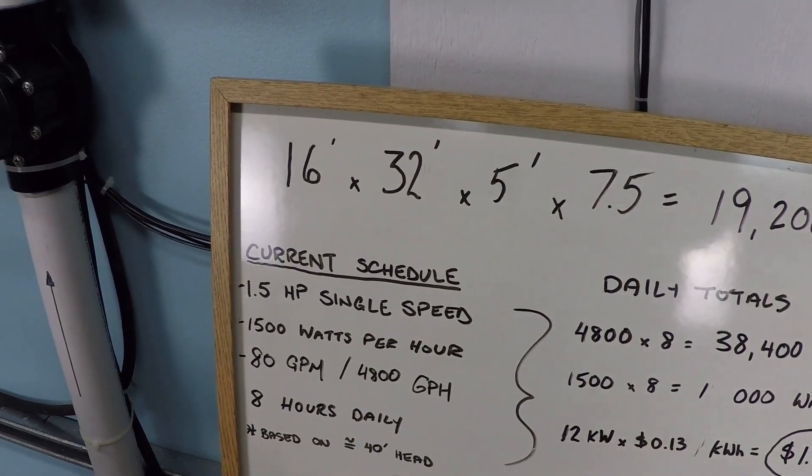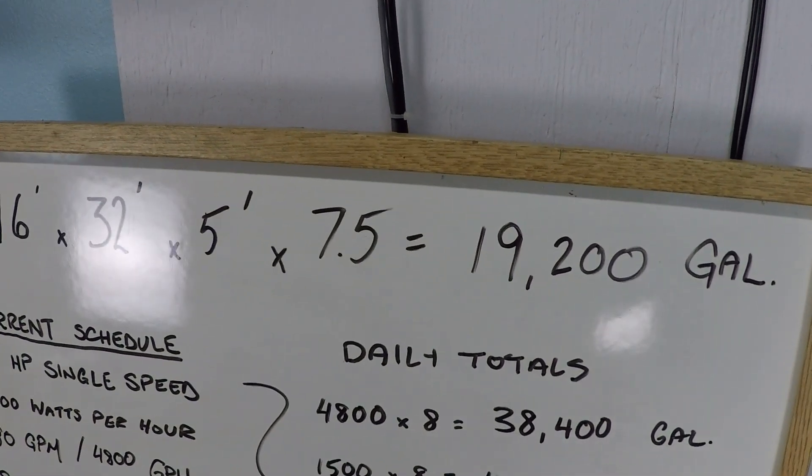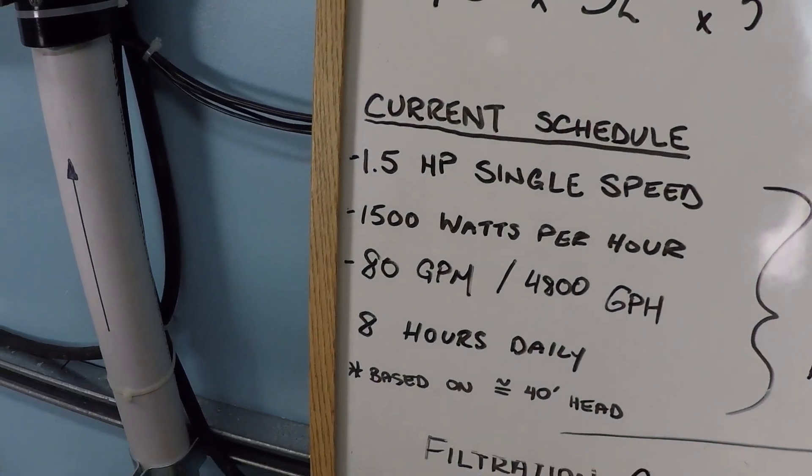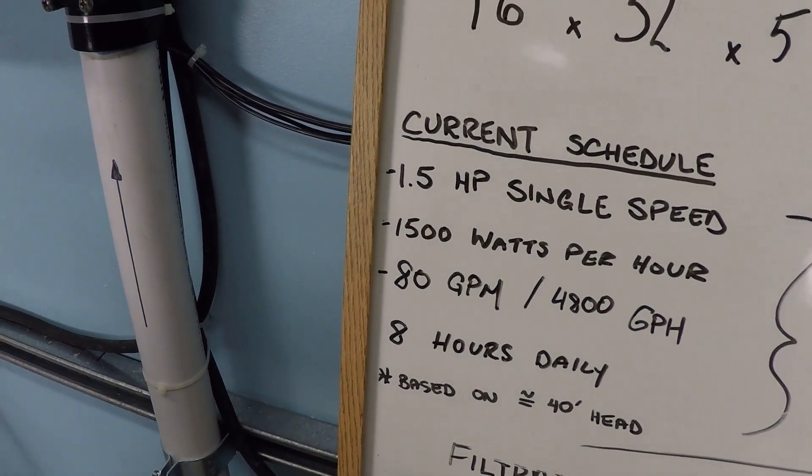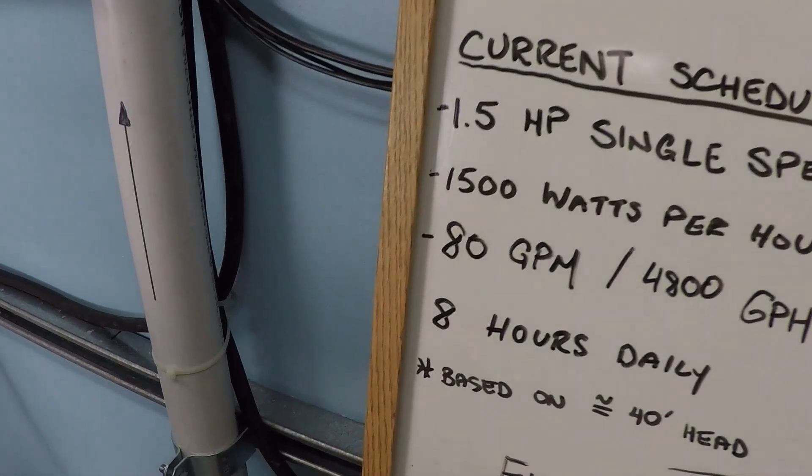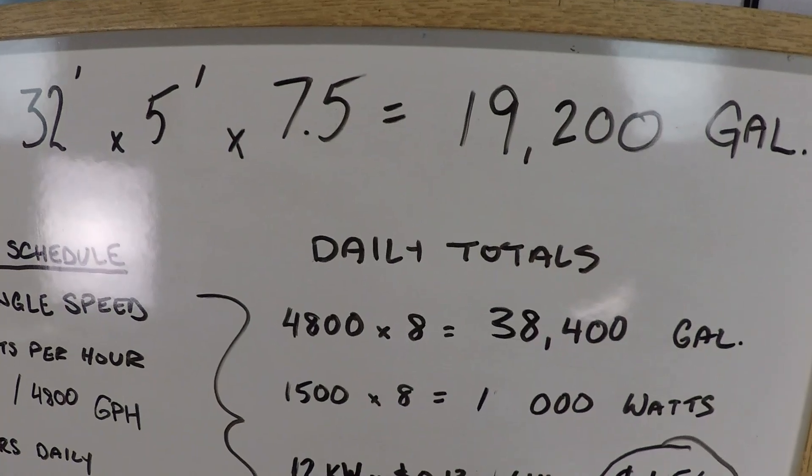In my last video, we were looking at a 16 by 32 foot swimming pool with a volume of 19,200 gallons. We were looking at a filtration schedule where the pool owner has a 1.5 horsepower single speed pump and they run it 8 hours a day. Doing so, they get about 38,000 gallons of water filtered daily.